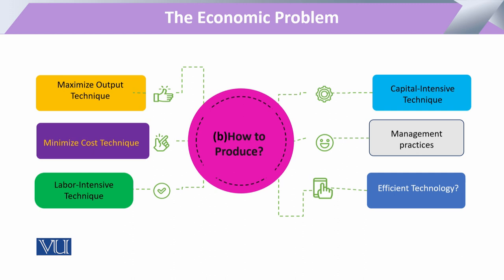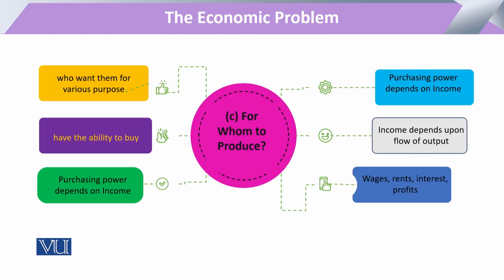How to produce میں یہ دیکھنا ہے کہ labor، capital اور energy کا بہترین combination کیا ہے جس سے output maximize ہو۔ ساتھ ہی یہ بھی دیکھنا ہے کہ اس طریقہ کار میں اخراجات کتنے ہوتے ہیں تاکہ نفع کا اندازہ ہو سکے۔ اسی لیے بہترین technology کا استعمال ضروری ہے جو سرمایہ اور وقت دونوں بچائے اور کم وقت میں زیادہ پیداوار دے۔